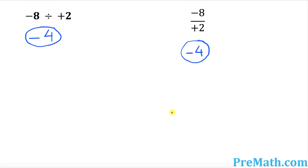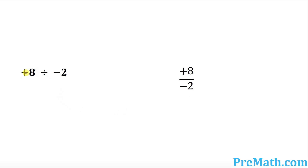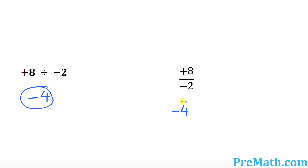Let's do a few more examples. How about this one? Positive divided by negative is going to be always negative. 8 divided by 2 is negative 4, and that is our answer. In fraction notation, negative and positive when divided gives you negative. 2 goes into 8 four times, so our answer is negative 4.